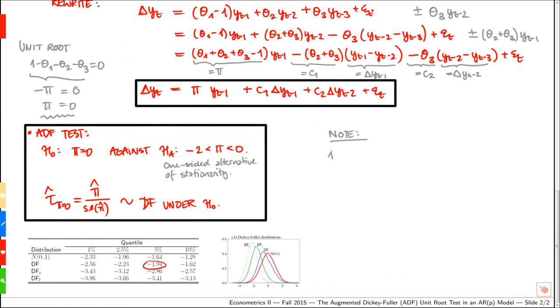A few comments. First, only the test of pi equals 0 follows a Dickey-Fuller distribution under the null. By contrast, tests on the coefficients c1 and c2 are standard normal. The reason for this is that the test for pi equals 0 imposes a unit root on the process, and that's why we get this non-standard distribution, while tests on c1 and c2, for example the test that c1 equals 0, does not impose a unit root.